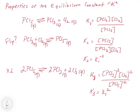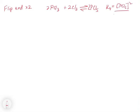Now let's do one more example. Let's say that we flip and double. So what we do is we take the PCL3 and we double that, and we take the CL2 and we double that, and we have that in equilibrium with PCL5 and we double that. So if we write K4 for this, K4 is going to be PCL5 squared over PCL3 squared over CL2 squared.